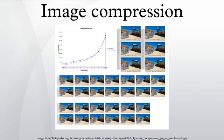The quality of a compression method often is measured by the peak signal-to-noise ratio. It measures the amount of noise introduced through a lossy compression of the image. However, the subjective judgment of the viewer also is regarded as an important measure, perhaps being the most important measure.